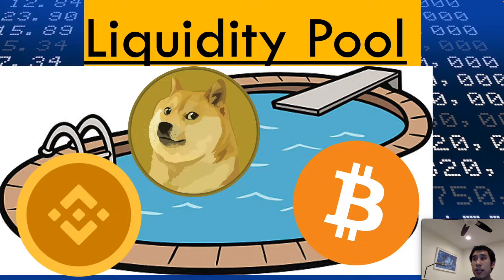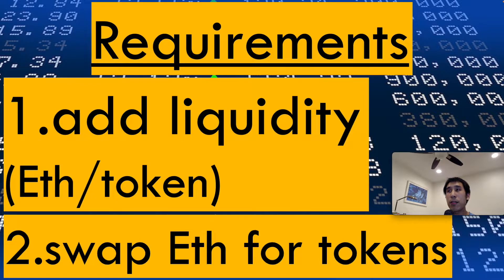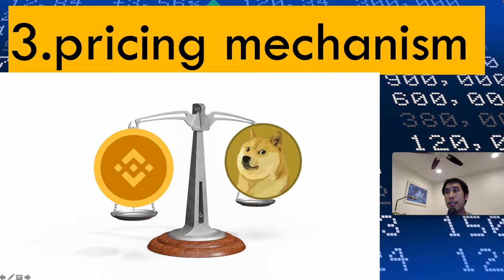Our decentralized exchange has three main requirements. First, we need a way to add liquidity into the DEX — we will trade between ether and an ERC20 token, so we need to initiate the liquidity pool with ether and tokens. Secondly, we need to allow customers to swap ether for tokens and tokens for ether. Lastly, we need a pricing mechanism to determine the ratio at which assets are swapped.